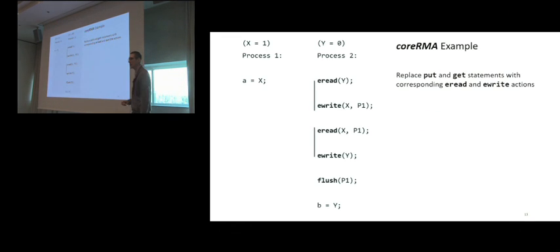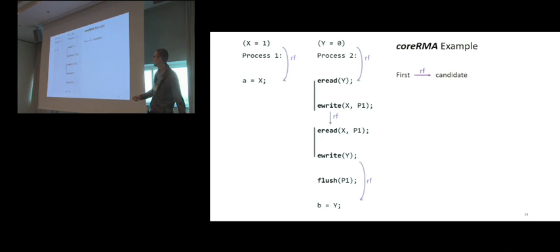As mentioned in the previous presentation as well, the way to do this is to iterate over all the RF relations and see which ones are feasible in coreRMA. We define that an RF relation is feasible if the resulting happens before relation is acyclic. The first step when applying this semantic is to split the remote statements into the corresponding actions. The vertical black line denotes that these two actions were generated by the same remote statement. Let's now pick one of the possible read from relations, which is shown in purple here, relating write to read. The program order for this example just relates the actions of the second process.